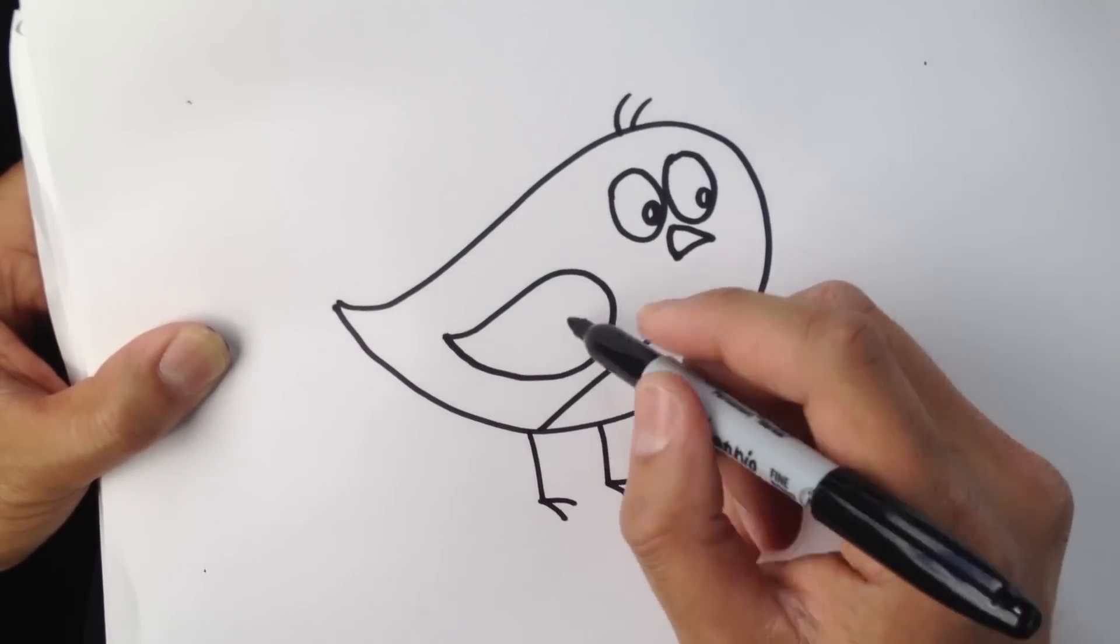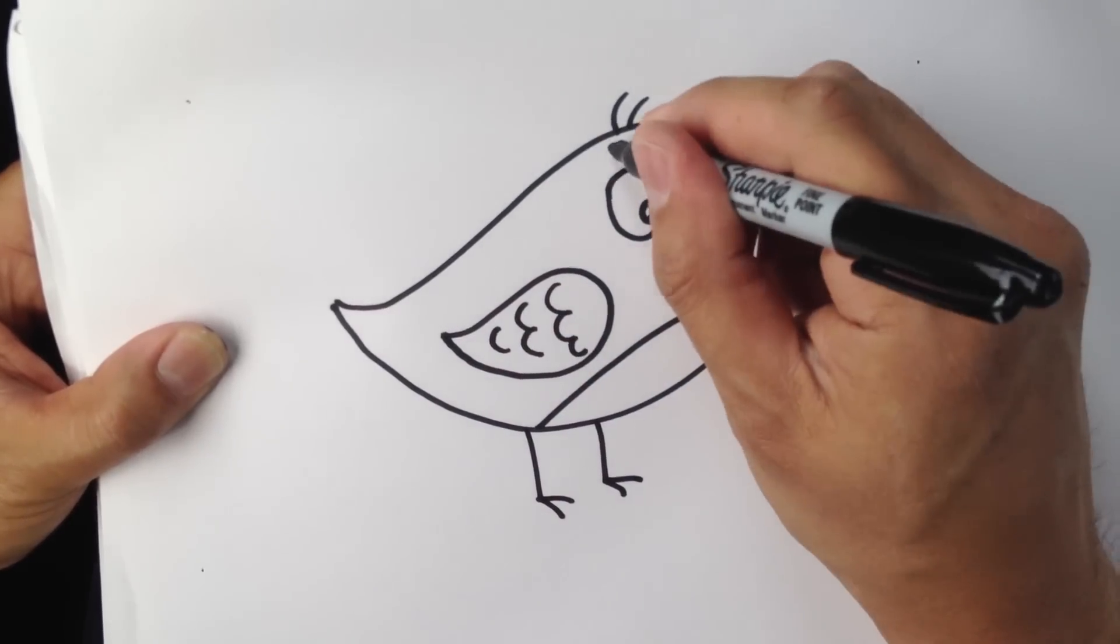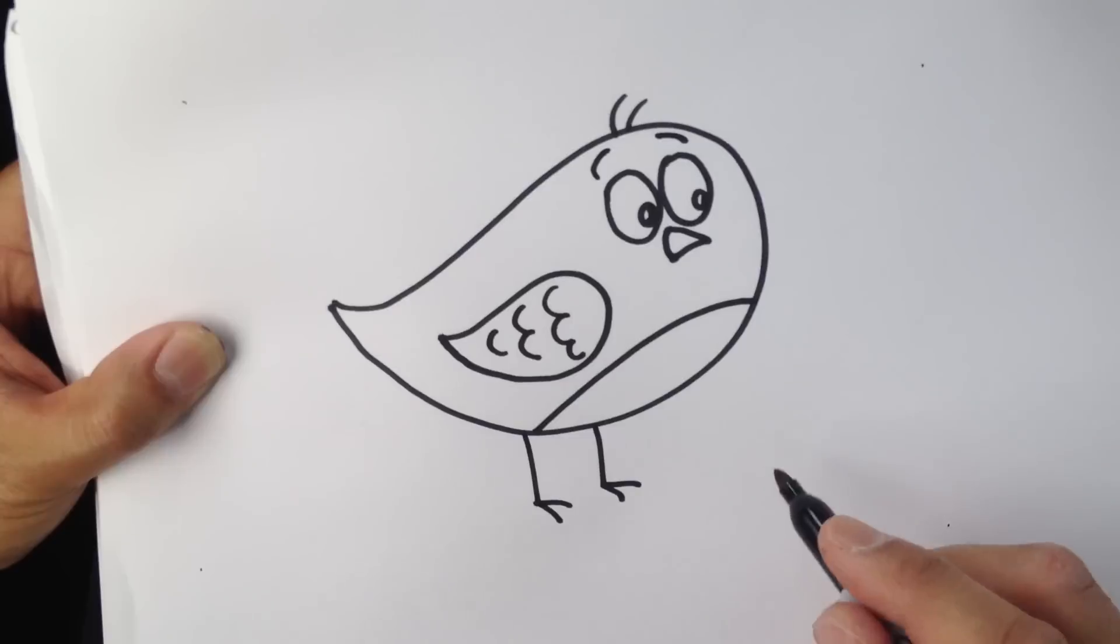And then we're going to put a series of little feathers, just like that. Three, two, one. A couple of eyebrows, and there we go.